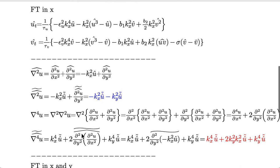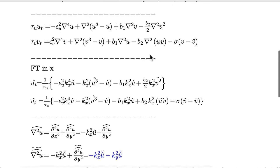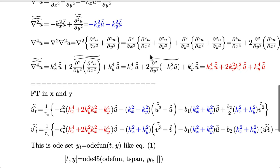I can do the same for the fourth-order derivative — you can pause the video to see how the calculation goes, but the result is this: if I Fourier transform the fourth-order derivative I get the expression shown here in red. I have the blue expression and the red expression, and I can substitute both into the original set of equations.